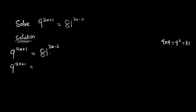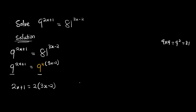The 2 here will now multiply the existing power 3x minus 2. So we can now equate our powers because the bases are the same. We equate 2x plus 1 with 2 times the bracket 3x minus 2. From here it's just a simple equation to solve and get your answer.